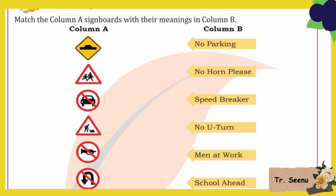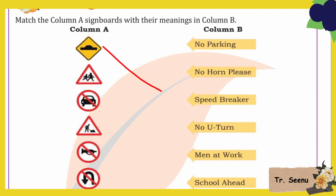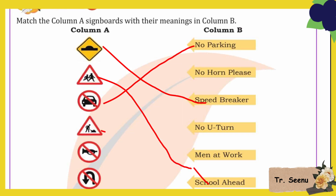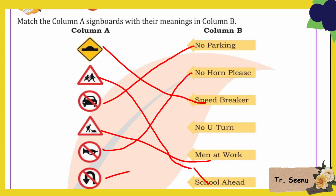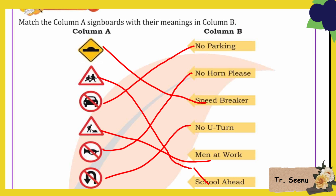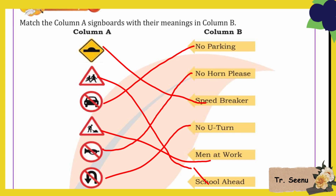In this question you have some traffic signals which you want to match. First, look at what this is - this is your speed breaker. After that is your school ahead sign. Next is no parking - this is that kind of symbol. After that is man at work, then you have no horn, and last is your no U-turn, which means you can't take a U-turn. Look at all your traffic signals carefully and see which symbol is telling which thing.